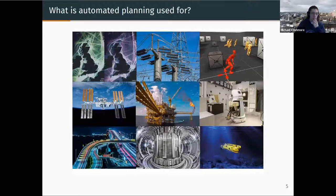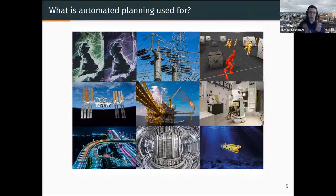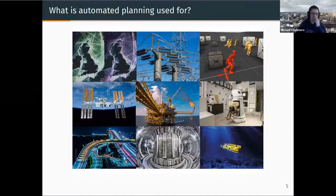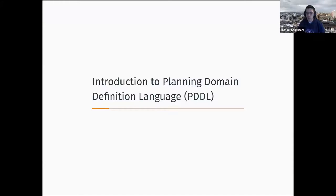What is automated planning used for? This is a slide I gave to some undergraduates last year — a screenshot of different projects I've been part of where we've applied domain independent automated planning. Obviously we have robotics, but it's a very widely applicable technique. In the top corner, for example, domain independent planning applied to provide situational awareness for operators in a control room looking at real-time data from ships. We also have power grid management, and in the bottom left, automated planning for urban traffic control, which includes a lot of uncertainty and continuous change.